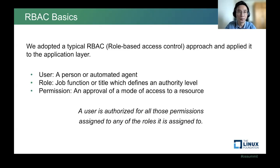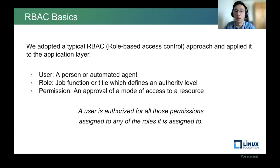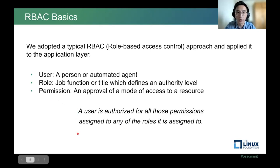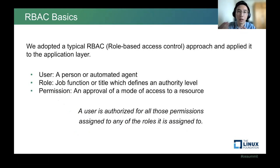First is the user — it could be a person, an automated agent, or anything that contacts your service. A role is a job function or title which defines an authority level. A permission is just an approval, like whether you have access to a resource. The one-liner summary: a user is authorized for all those permissions assigned to any of the roles it is assigned to.